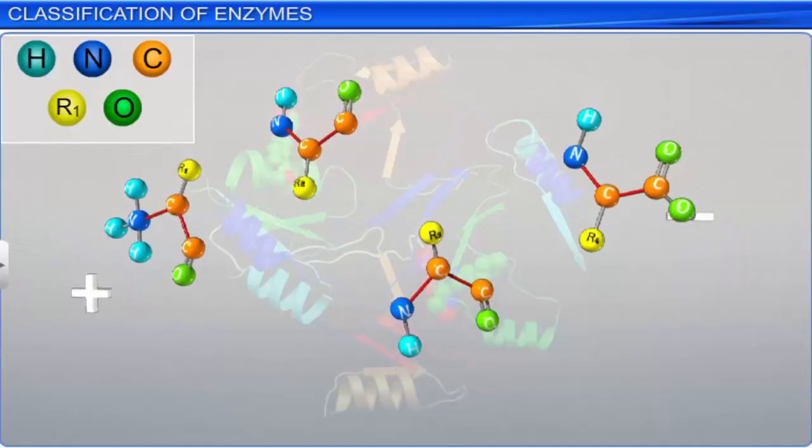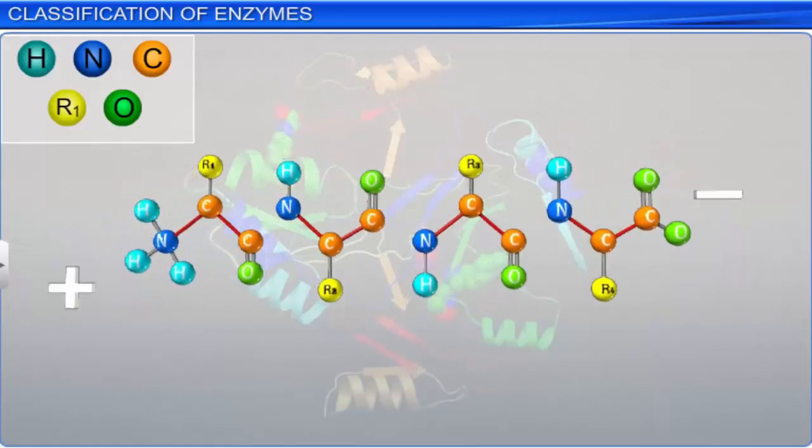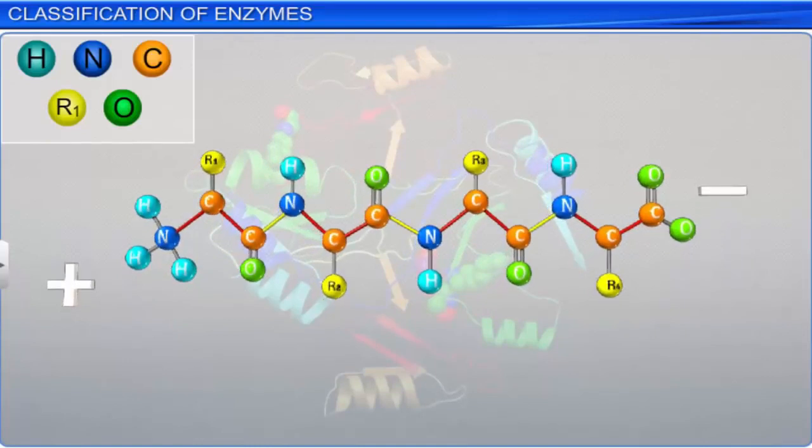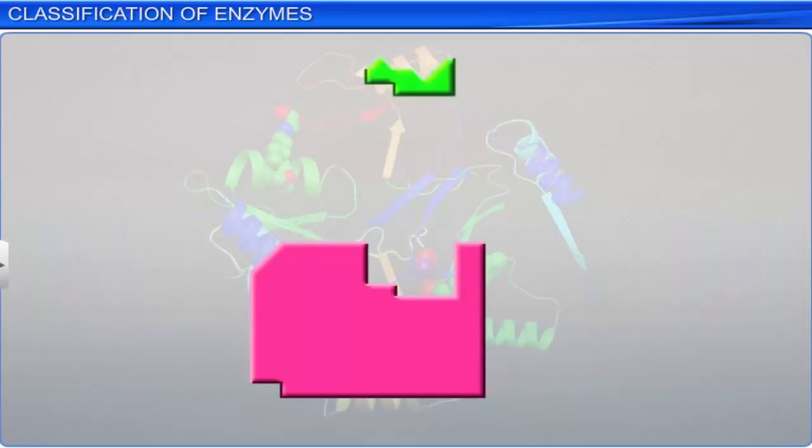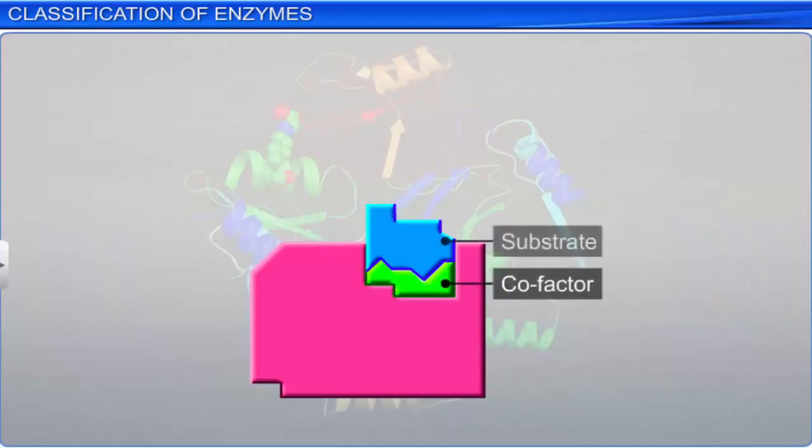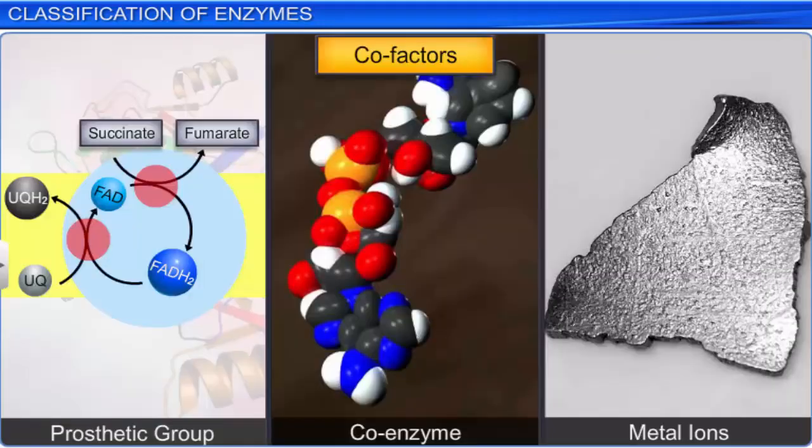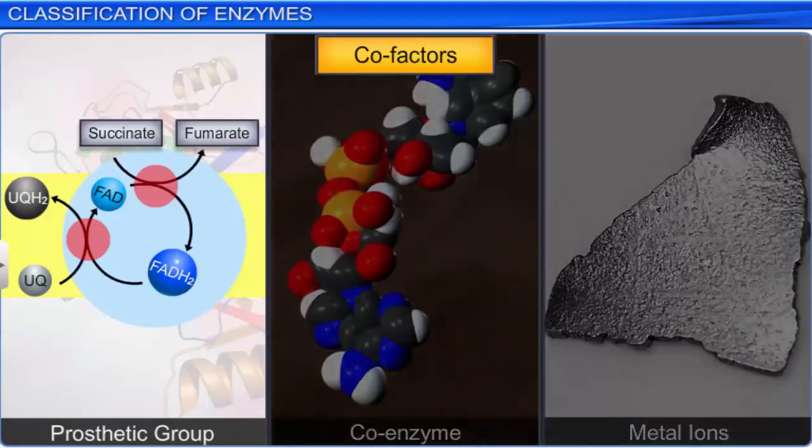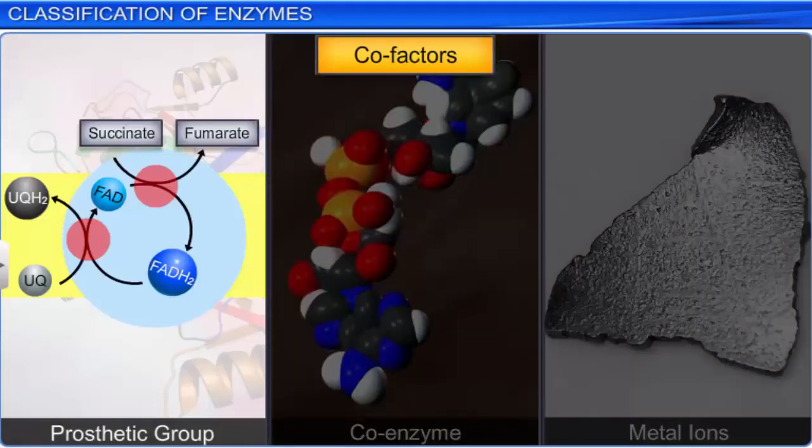As you know, enzymes are three-dimensional protein structures joined by polypeptide chains. However, sometimes, non-protein chemical compounds also bind to the enzyme and make it catalytically active. These chemical compounds are called cofactors while the protein part of such enzymes is known as apoenzyme. There are three kinds of cofactors: prosthetic groups, coenzymes, and metal ions.